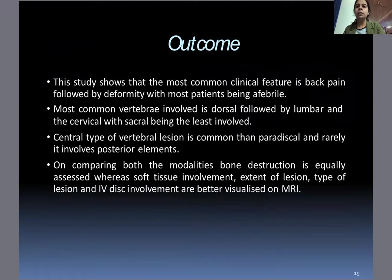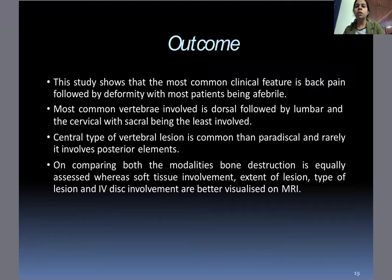Outcome: The study showed that the most common clinical feature is back pain followed by deformity, with most patients being afebrile. The most common vertebral level involved is dorsal, followed by lumbar and cervical, with sacral being the least involved. Central type of vertebral lesion is more common than paradiscal, and posterior element involvement is rare. Comparing both modalities, bone destruction is equally assessed, whereas soft tissue involvement, extent of lesion, type of lesion, and IV disc involvement are better visualized on MRI.